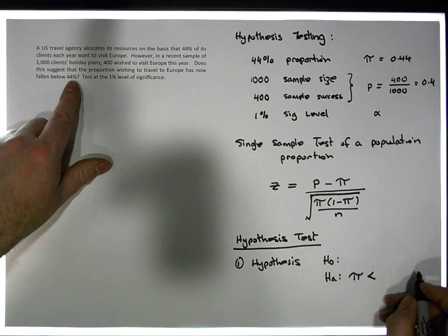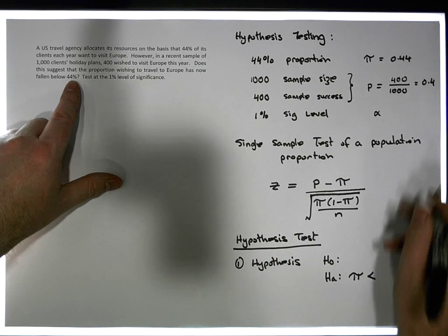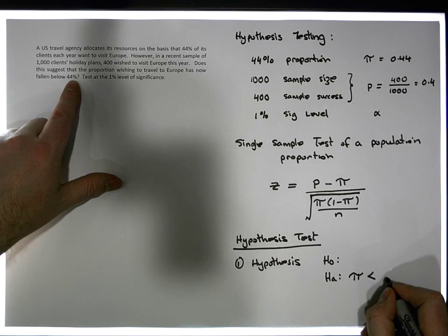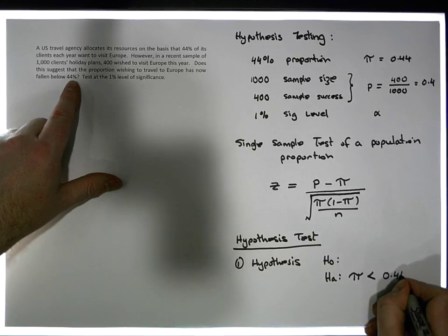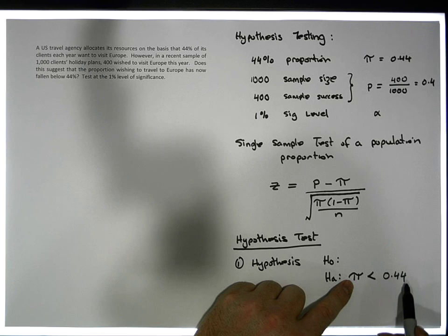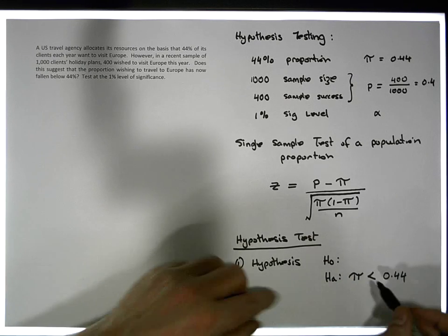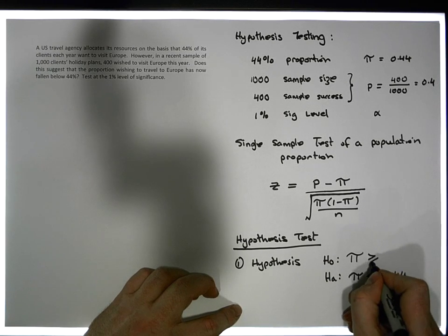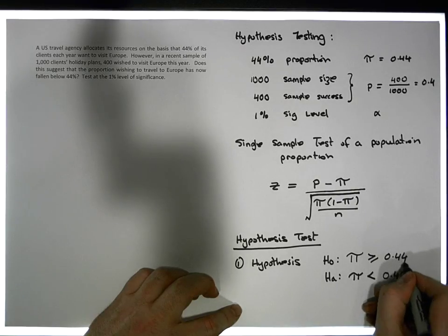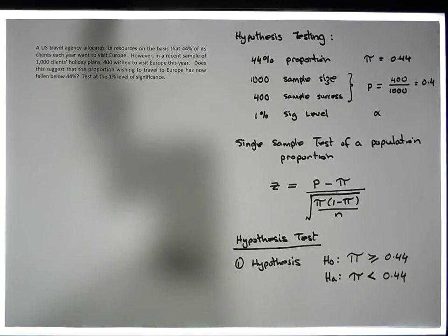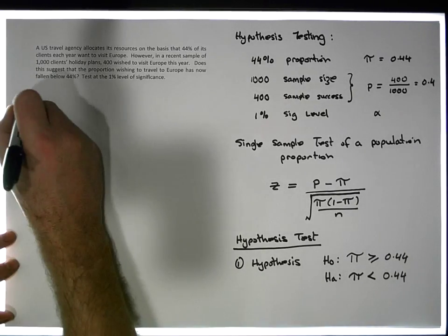Less than 44% — that's what our null position will be. So the null hypothesis is that the population parameter is greater than or equal to 0.44, and the alternative is that the population parameter is less than 0.44. That's our hypothesis.